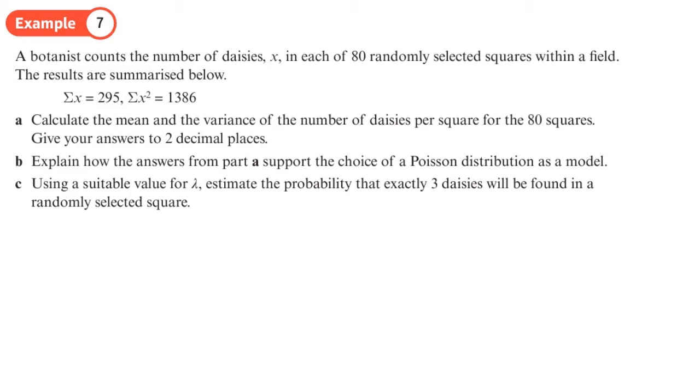Right, so a botanist counts the number of daisies x in each of 80 randomly selected squares within a field. The results are summarized below. That makes things a bit easier for us—we don't have to add these 80 numbers together or square the 80 numbers then add them together. Part a: calculate the mean and variance of the daisies per square for the 80 squares, giving your answer to two decimal places. This is just basically working out stuff that we've done before in normal maths.